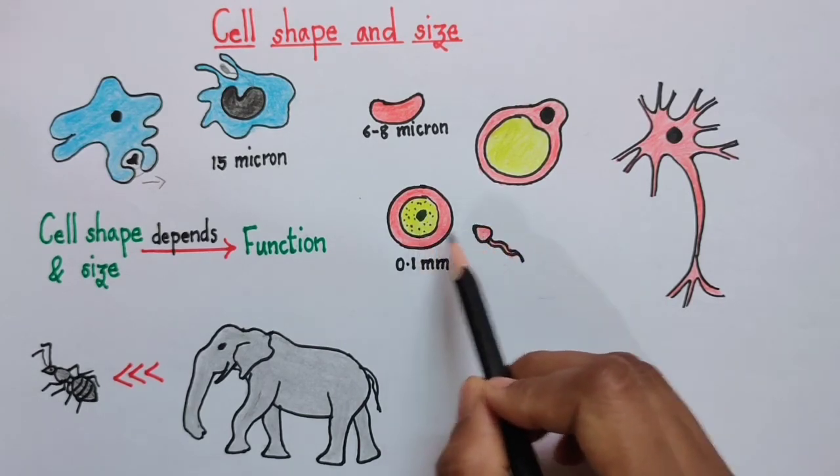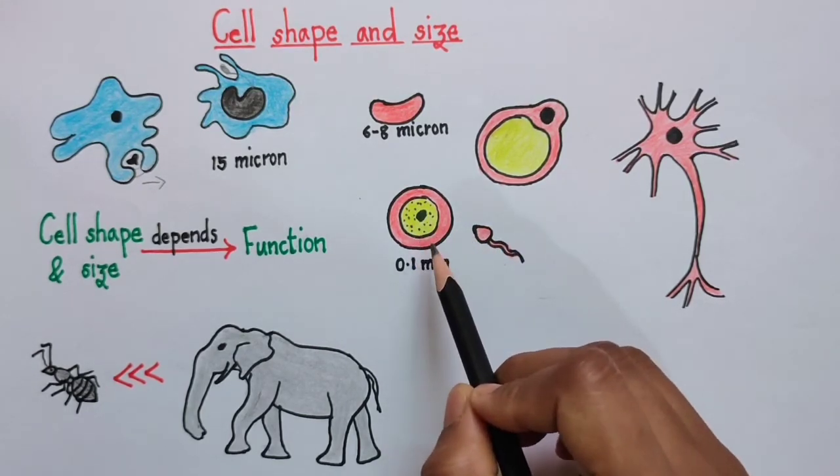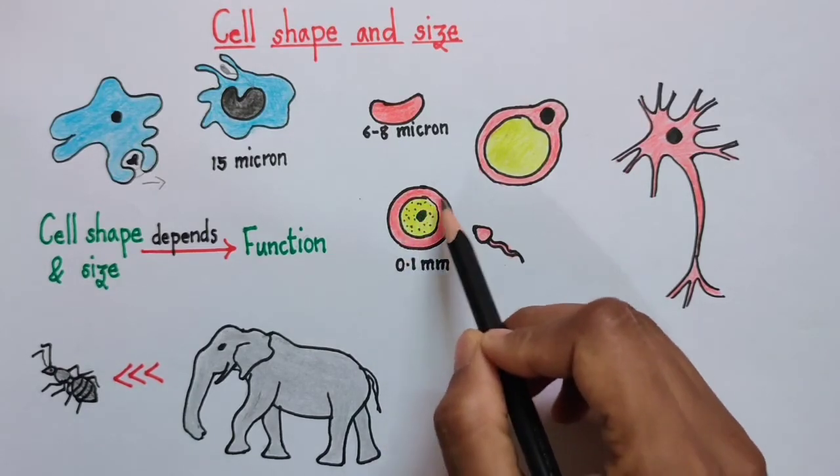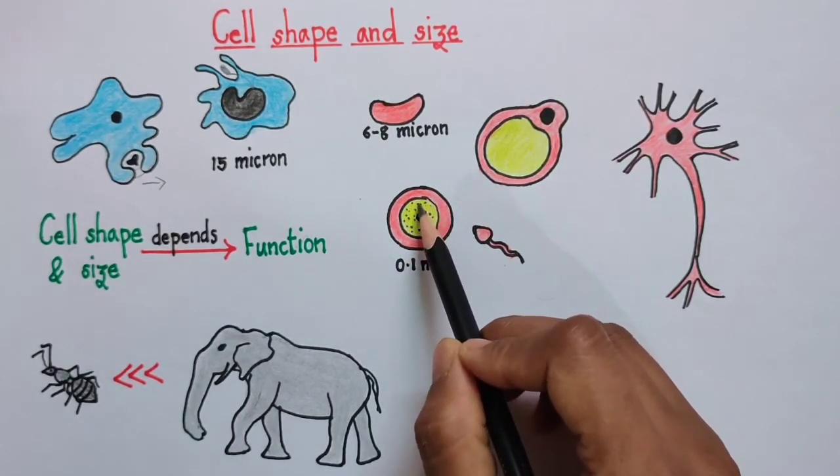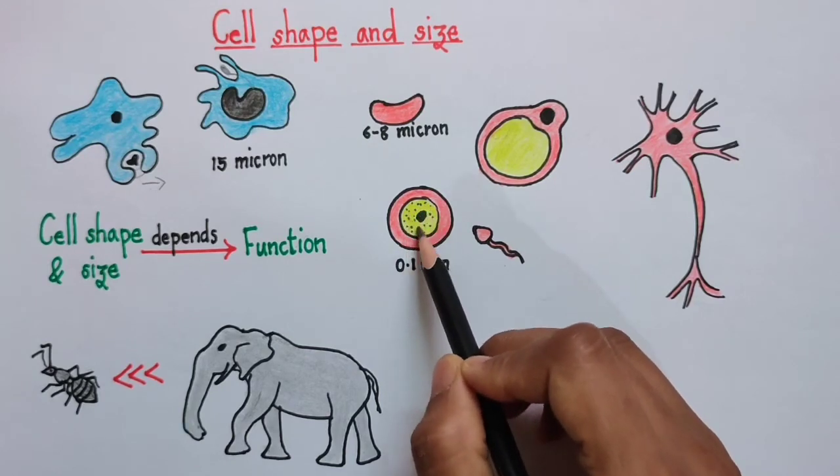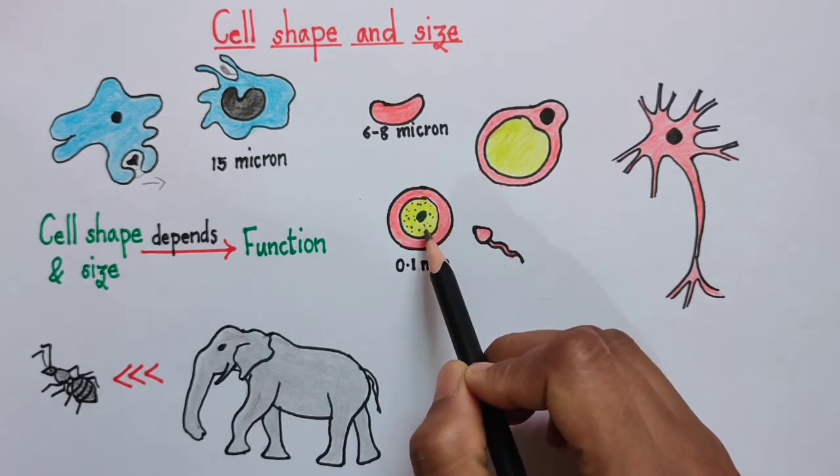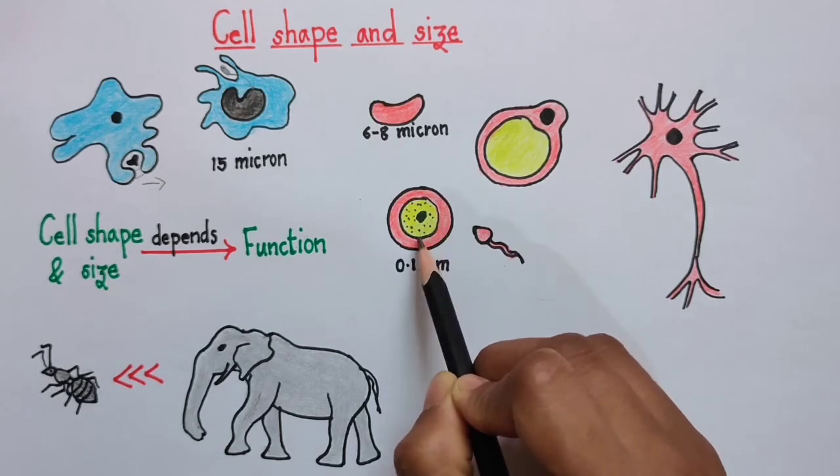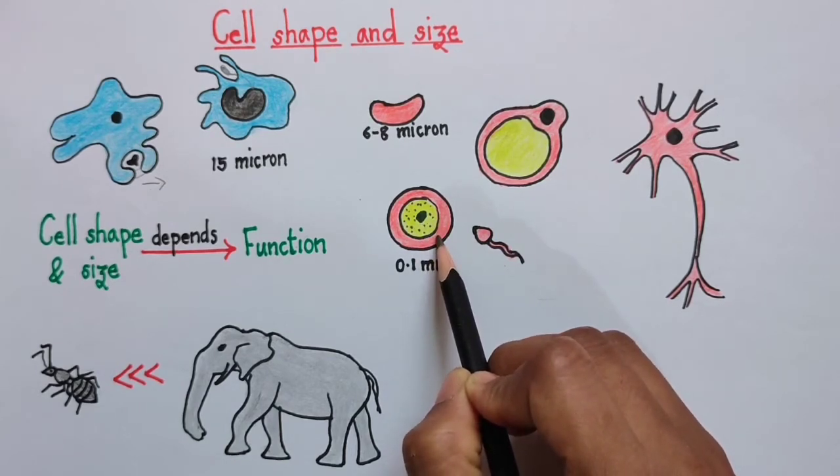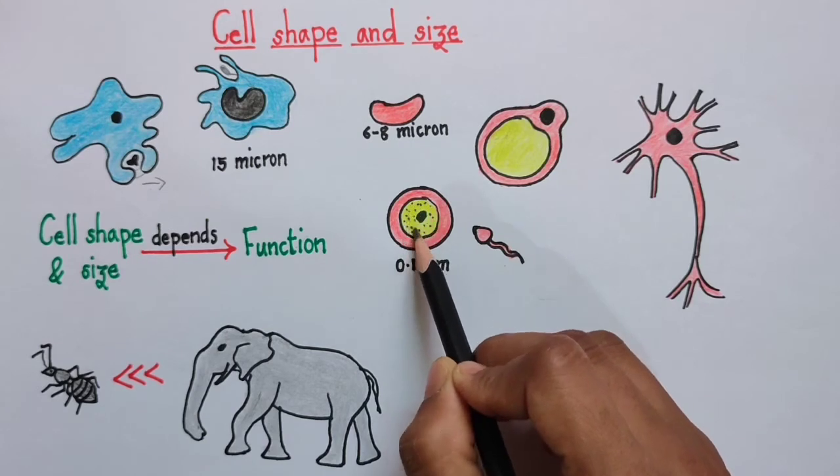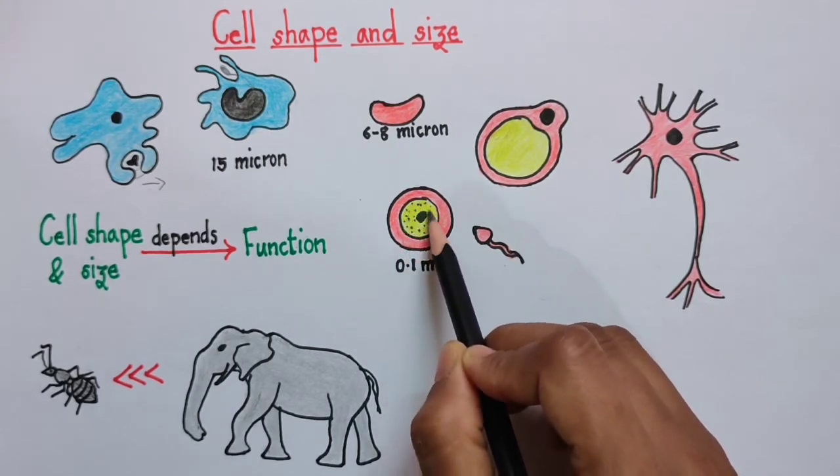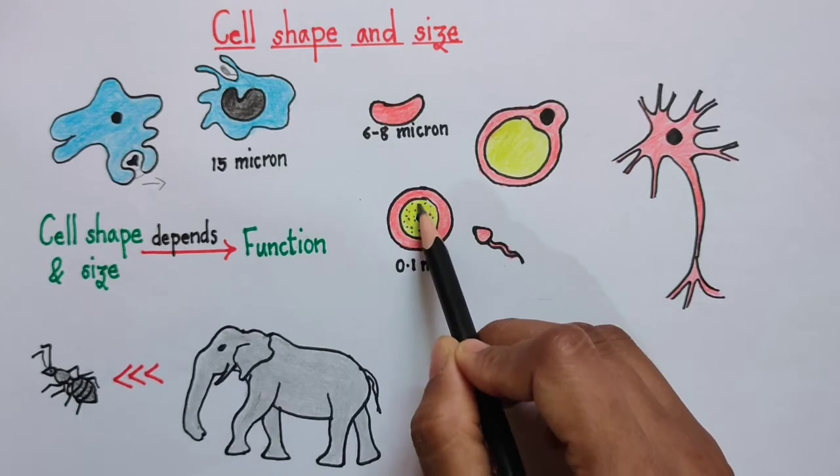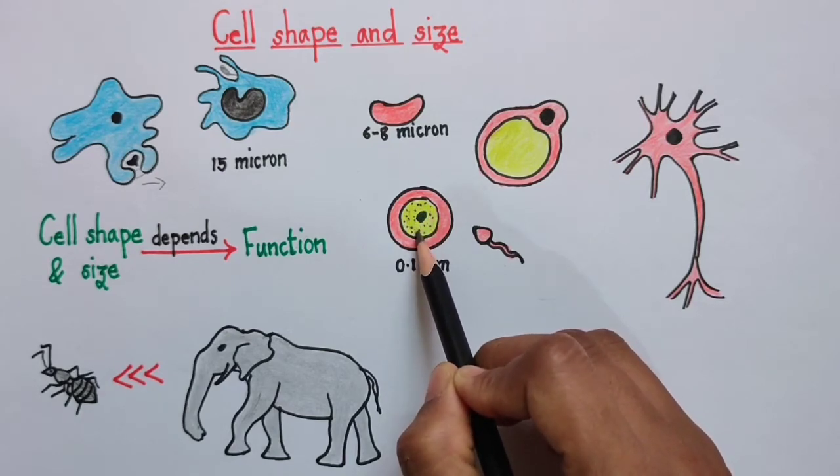Now why is there so much difference between the sizes of the two? This human ovum has a cytoplasm, and this cytoplasm basically stores the nutrients. Why does it have to store nutrients? If the ovum gets fertilized by the sperm, then in the initial stages of development of the embryo, the nutrients will be provided by this nutrient reserve which is present in the cytoplasm of the ovum. However, later on, this job will be taken up by the placenta.